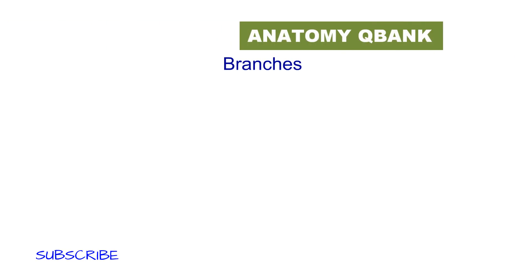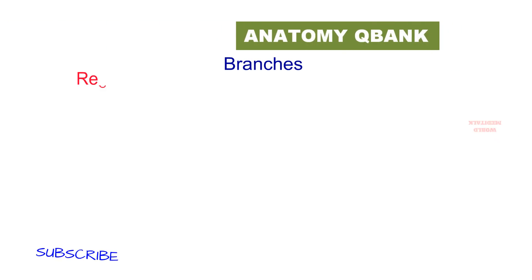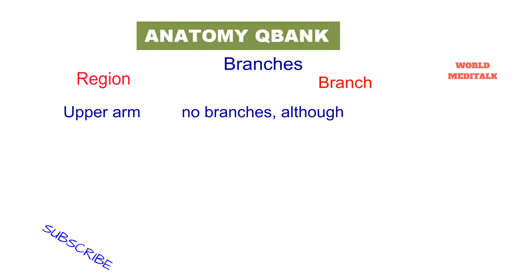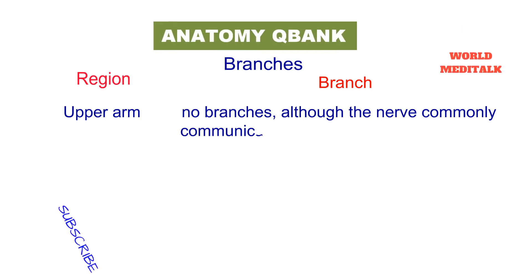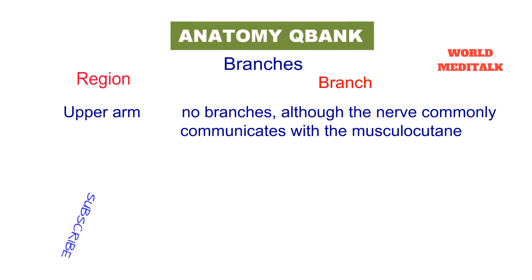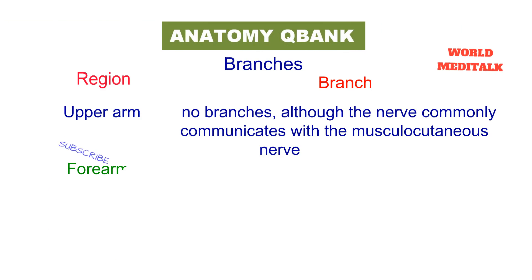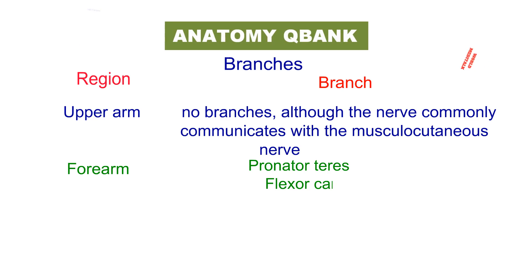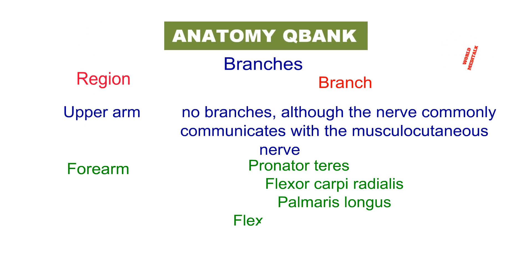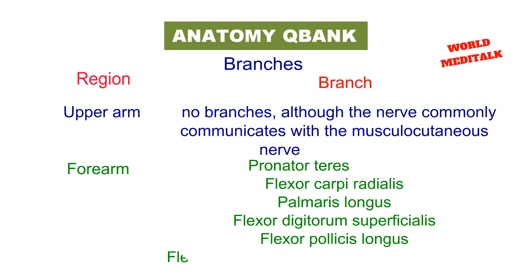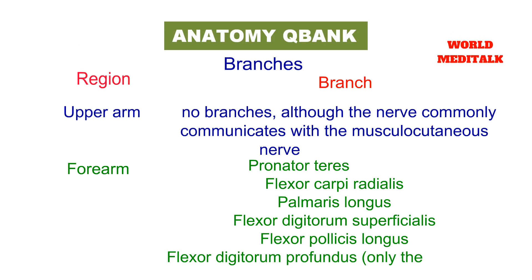Branches. In the upper arm, there are no branches, although the nerve commonly communicates with the musculocutaneous nerve. In the forearm, branches are supplied to pronator teres, flexor carpi radialis, palmaris longus, flexor digitorum superficialis, flexor pollicis longus, and flexor digitorum profundus — only the radial half.